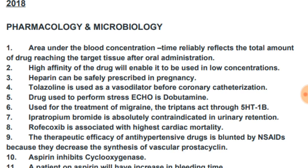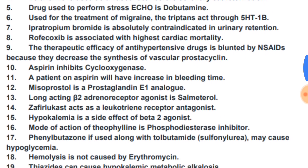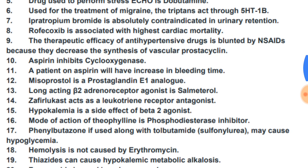The triptans used for the treatment of migraine act through the 5-HT1B receptor. Ipratropium bromide is absolutely contraindicated in urinary retention.